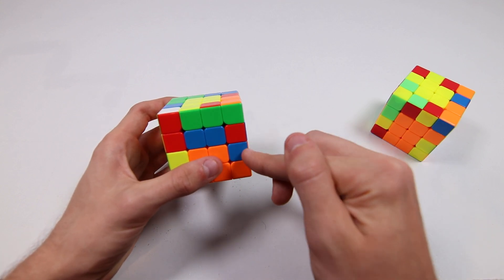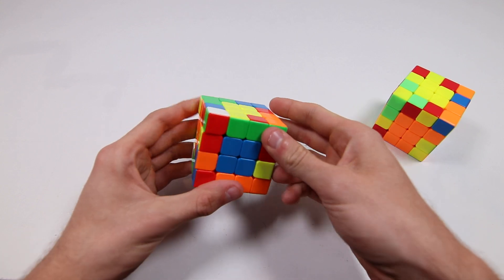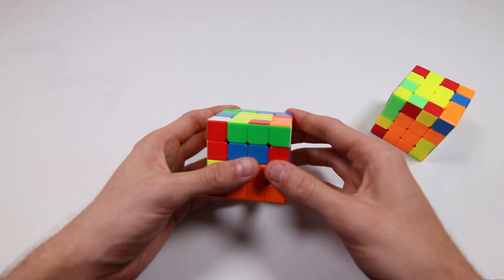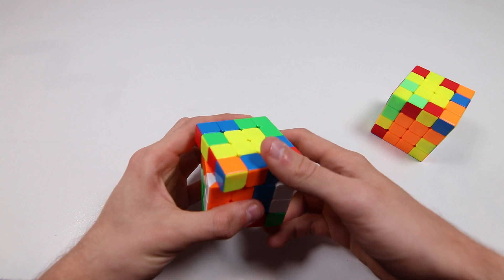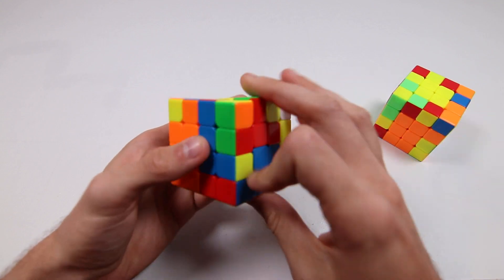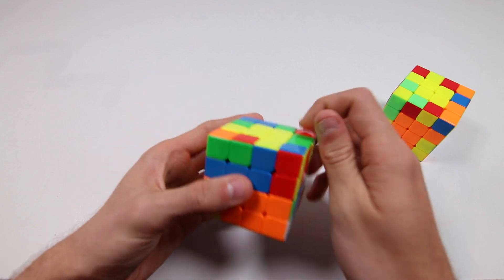But a really nice solution for bringing this edge over to here, so kind of like that, but of course without messing up the centers in that way. You could do r'f, r2u, r'f', and that works out really nicely, just a nice little five move trigger.